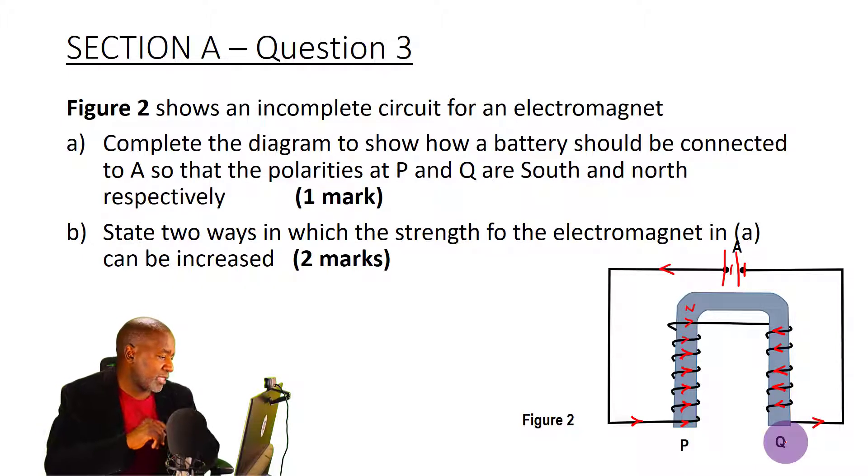Part B we are asked to state two ways in which the strength of the electromagnet in A can be increased. There are two ways we can do this. We can increase the number of turns in the coil, increase the number of turns in the coil, and number two, increase the amount of current flowing through the coil.